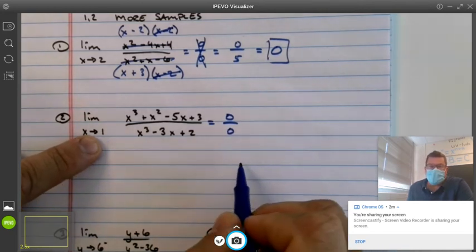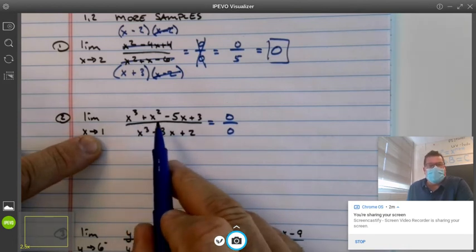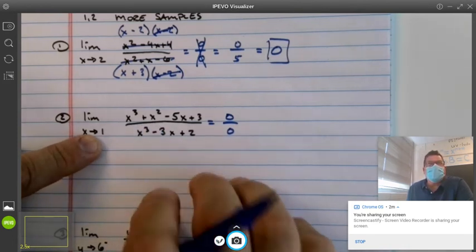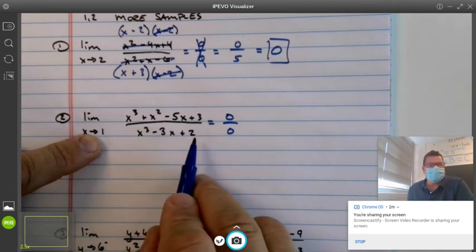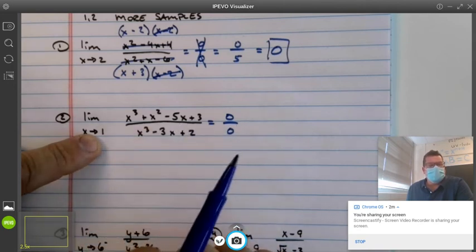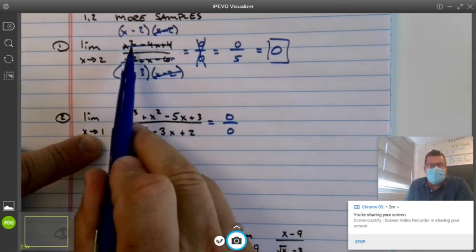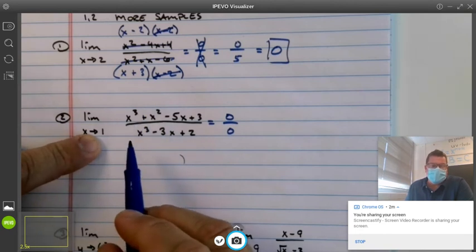That means we have to factor, cancel, and shove it back in. The top, it may be factorable by grouping. The bottom, not so much. So the way I do these problems when it's higher than a quadratic, when the degree is higher than 2, I just use synthetic division.